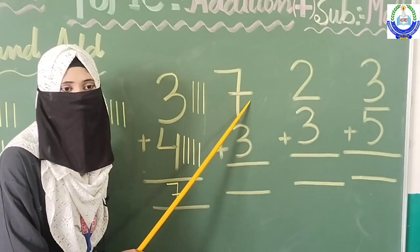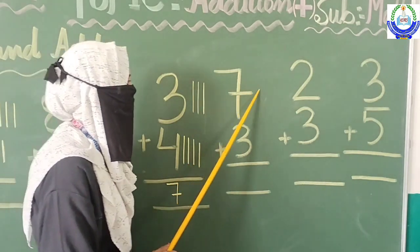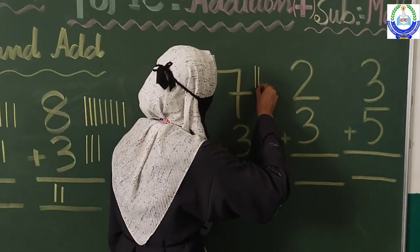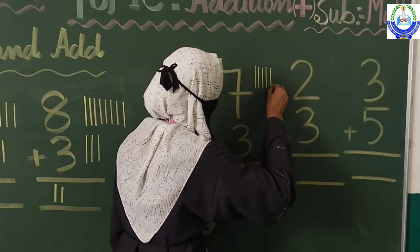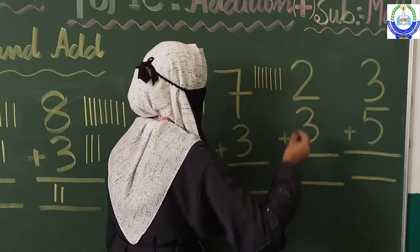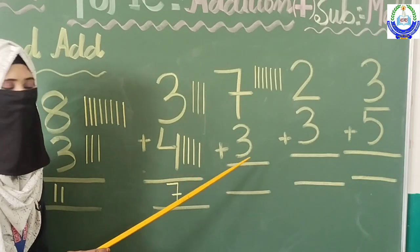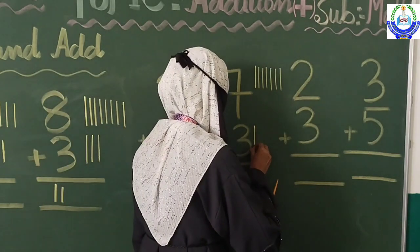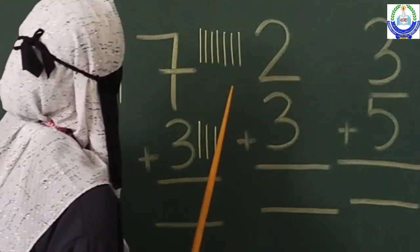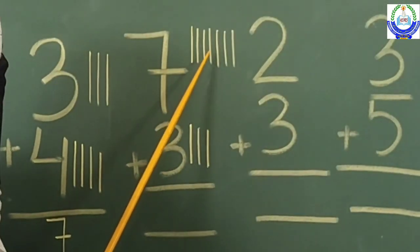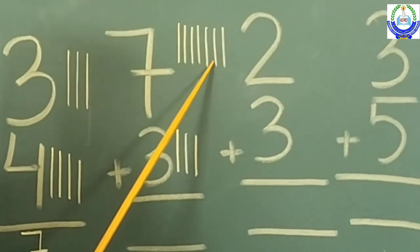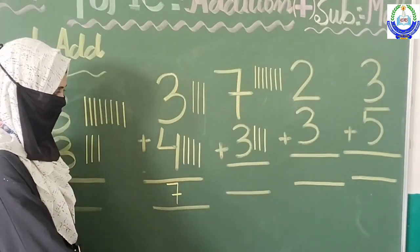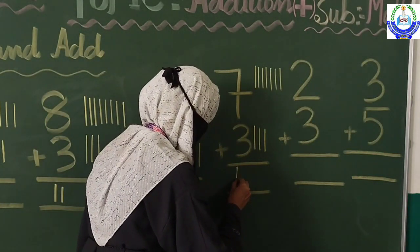Move to the next number. Which number is here, students? This is seven. We will draw seven lines: one, two, three, four, five, six, seven. Next, which number is here? This is three. We will draw three lines: one, two, three. Let's count them all: one, two, three, four, five, six, seven, eight, nine, and ten. We will write here: ten.